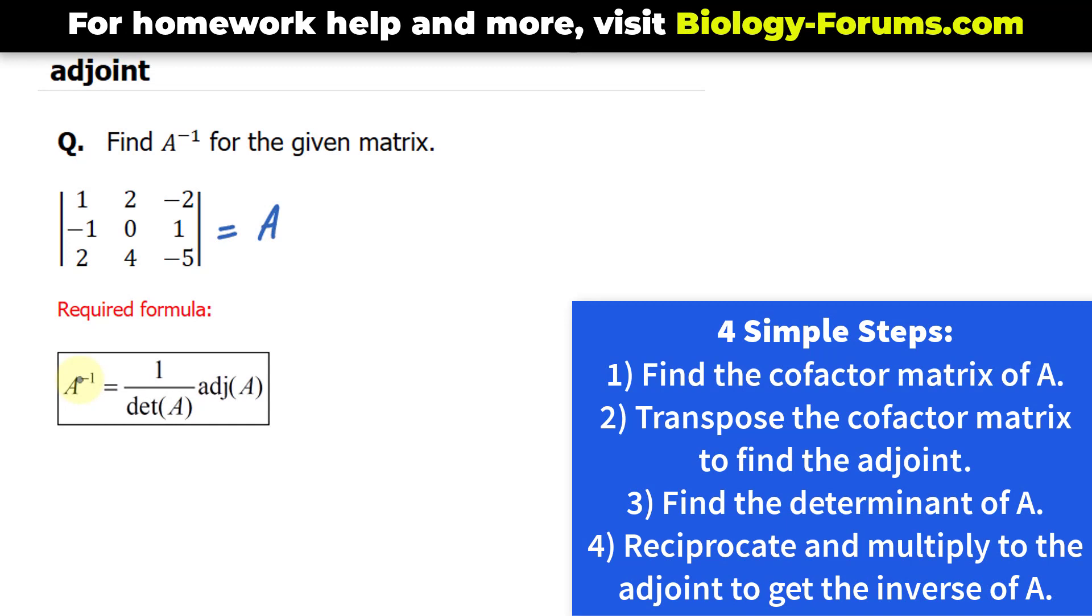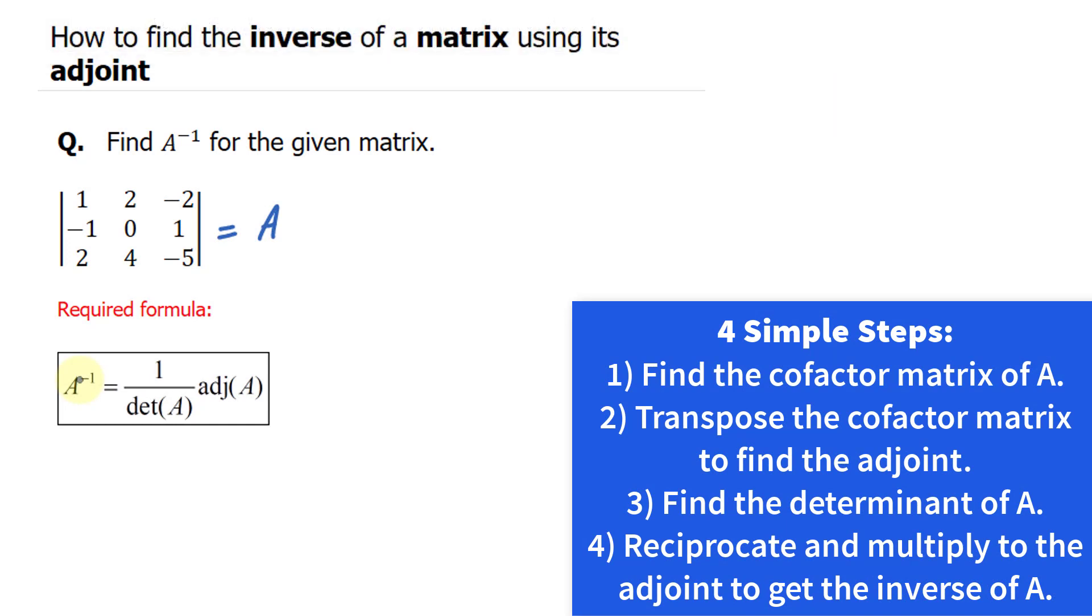To find the adjoint matrix, you need to find the cofactor matrix and then transpose that. We've already gone through a lesson on how to find the cofactor matrix, but in case you missed it, here's how to do it.